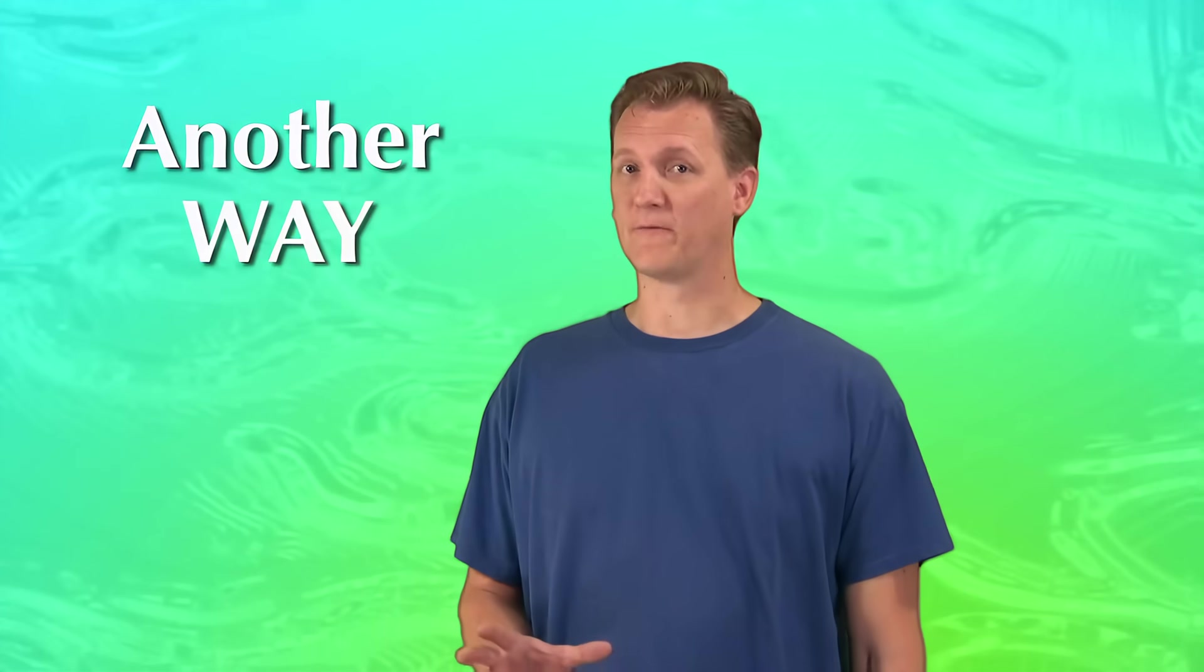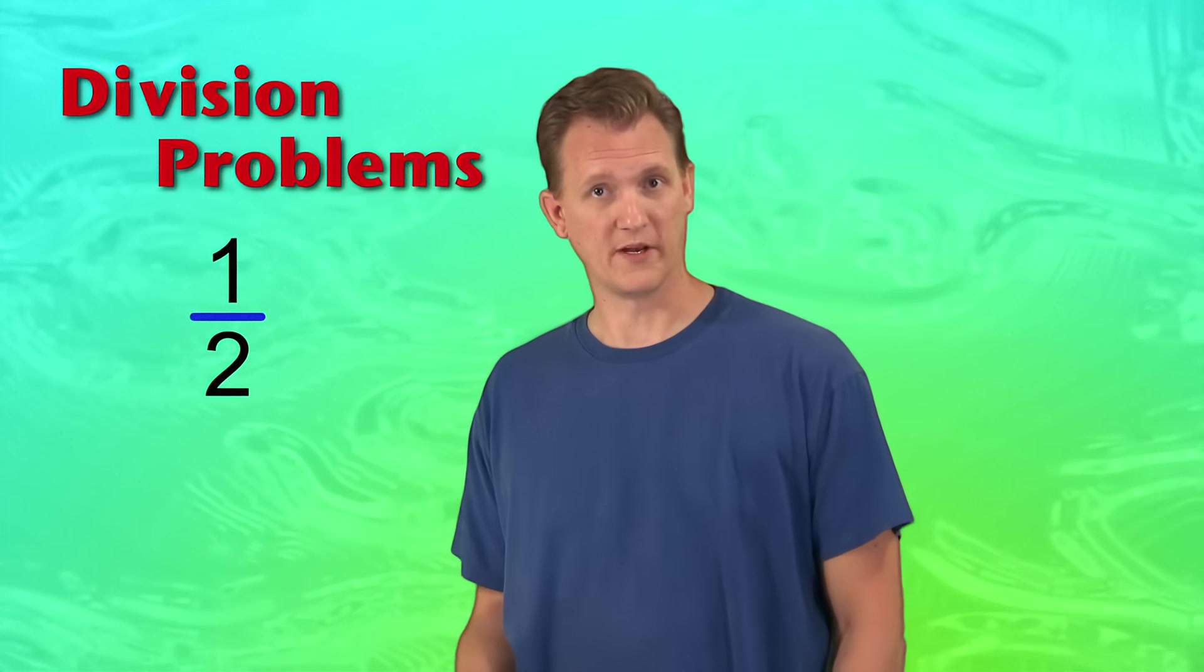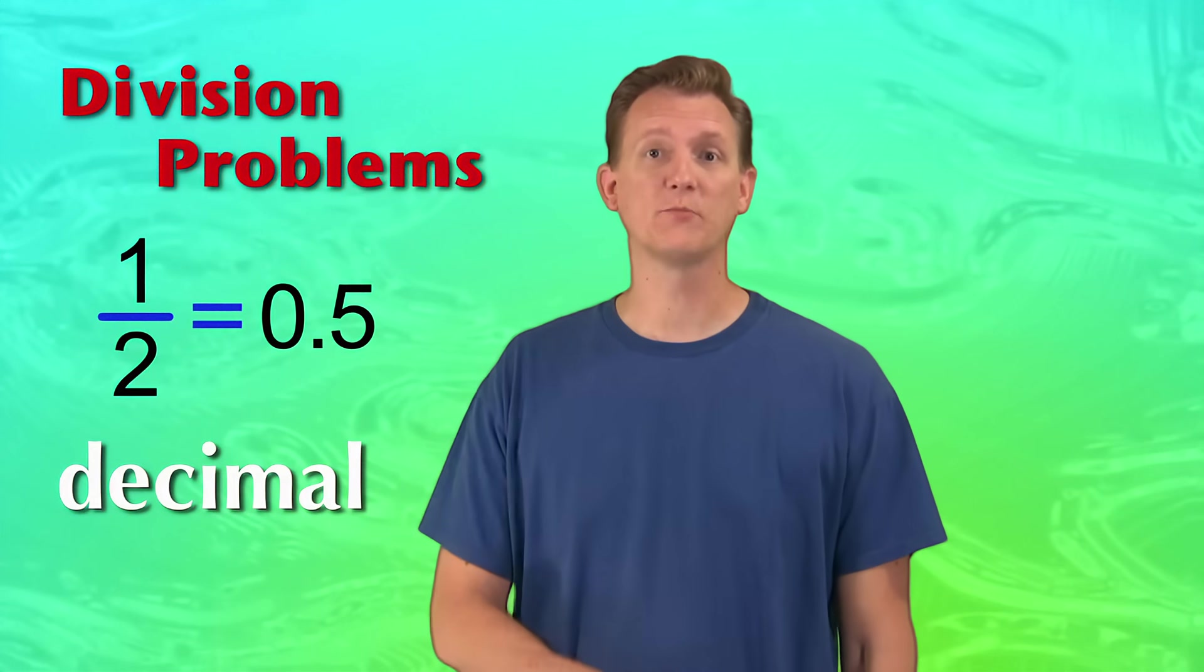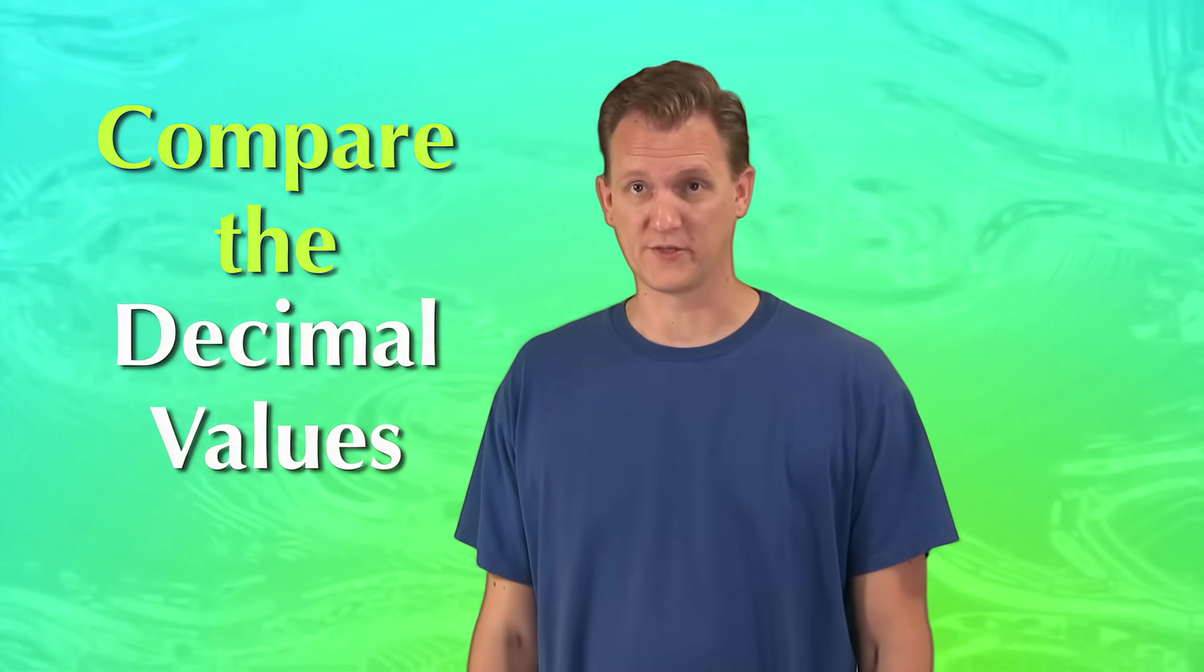Okay, cross-multiplying is pretty cool, but there's another way to compare fractions that you need to know about. But this one's only really good if you can use a calculator. Remember, the reason that fractions are tricky to compare is because they're really division problems. But if we want to, we can just do the division and get the answer, which is the decimal value of the fraction. So if you have two fractions to compare, you can just do the division, preferably using a calculator, and then compare the decimal values.